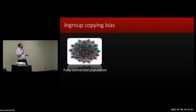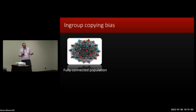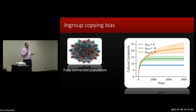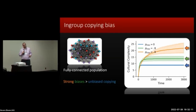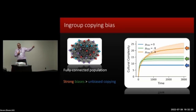The first thing we look at is what happens when the population is fully connected — so there's basically no social network structure because everybody is equally likely to interact with everybody else. In the plot, we show cultural complexity over time, where the different colored lines represent how likely you are to deliberately seek out an in-group member rather than copying uniformly at random. What you can see is that strong biases — such as the orange and green lines — tend to produce higher levels of cultural complexity than purely unbiased copying, despite there being absolutely no social network structure.